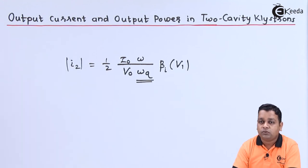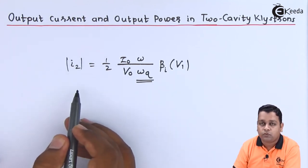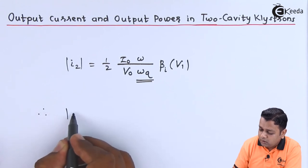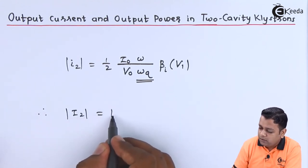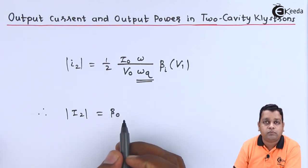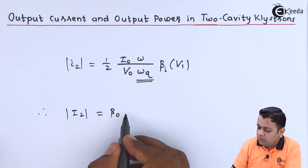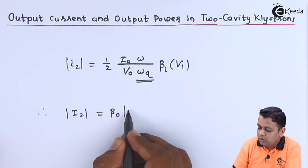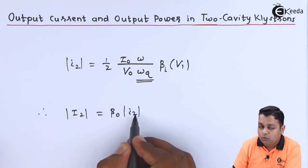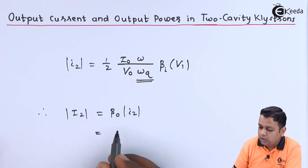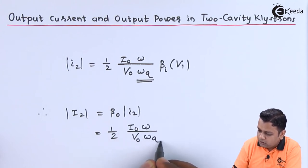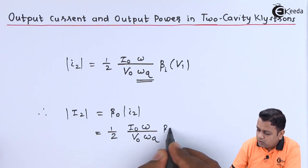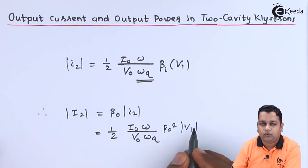With respect to this formula for mod of I2, the fundamental current mod of capital I2 can be given by simply multiplying it with the beam coupling coefficient of the output cavity. So it will be beta_0 into mod of small i2. The formula will be 1/2 in multiplication to I0 omega divided by V0 omega_Q into beta_0 squared into mod of V1.